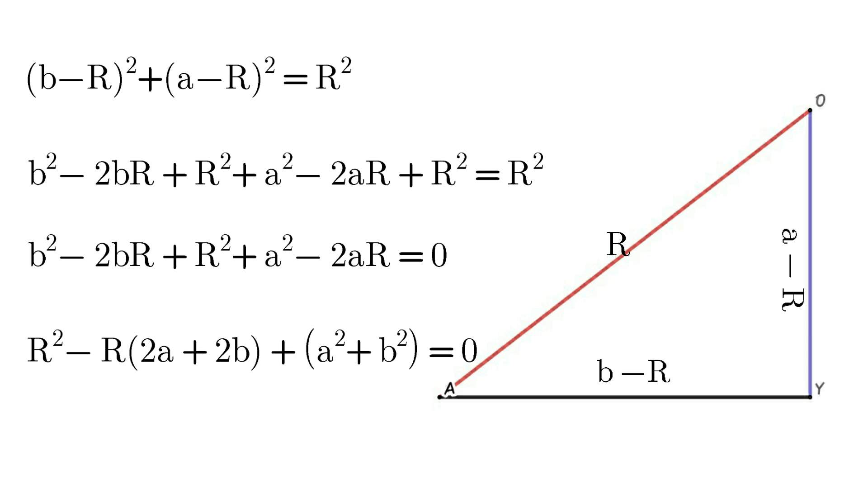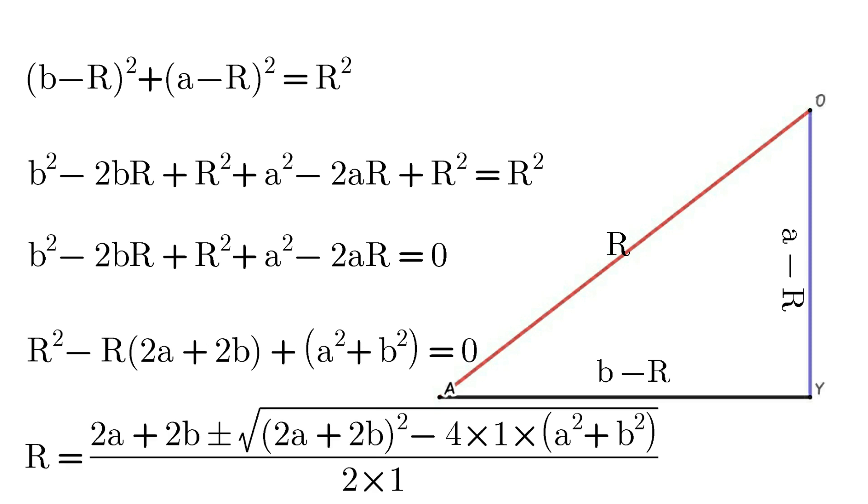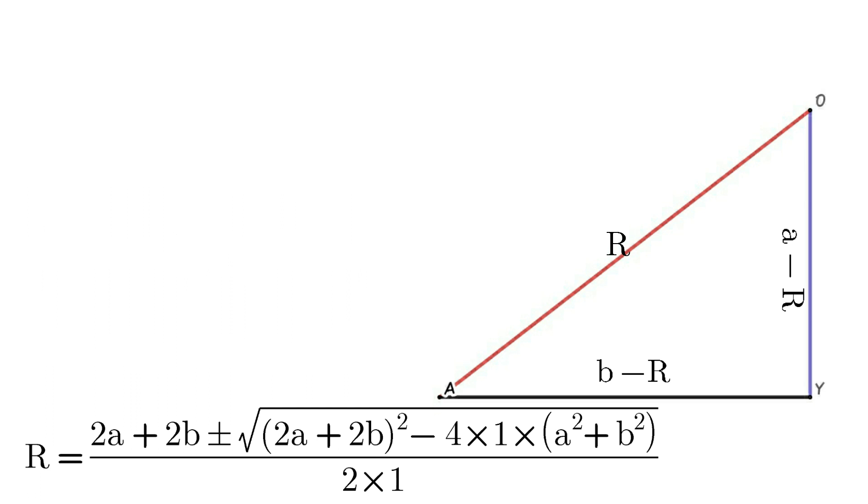This is a quadratic equation with variable R. So R equals (2A plus 2B) plus or minus the square root of (2A plus 2B)² minus 4 times 1 times (A² plus B²), all divided by 2 times 1.